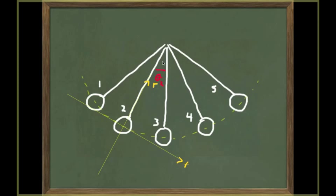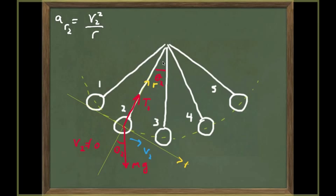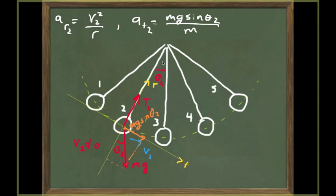Now let's analyze the forces and accelerations at point 2. At point 2, the pendulum is at angle theta₂ from the vertical, so the weight makes angle theta₂ with the radial direction. The tension acts along the string, and the velocity is not zero — it points tangentially to the curve. This gives a non-zero radial acceleration equal to V₂² divided by R. The tangential acceleration is g sine theta₂, using the same approach as before.